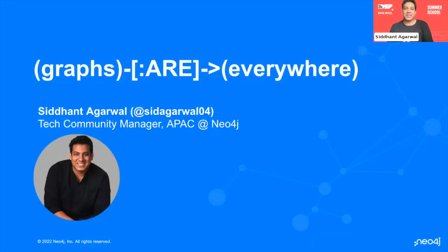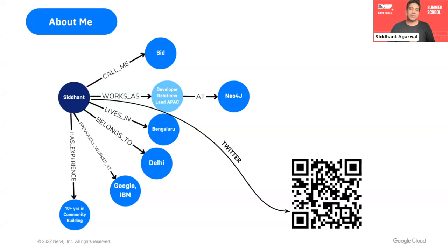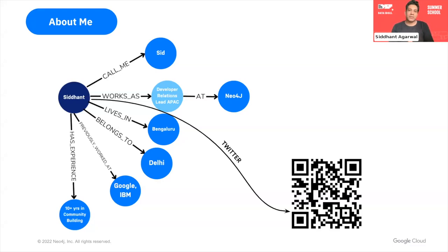Welcome and warm welcome to everyone out there. Good morning, good evening, good afternoon based on the time zone you're joining in. My name is Siddhant, you can call me Sid. I work with Neo4j as the Developer Relations Lead for APAC, where I help build developer communities. I was born and brought up in Delhi, and for the last eight years I've been in Bangalore. I started my journey with IBM, then went on to work with Google, two startups in between, and now with Neo4j.